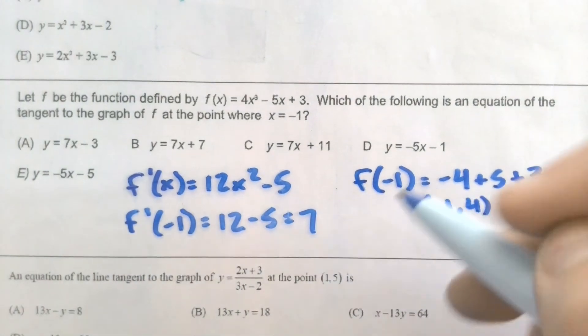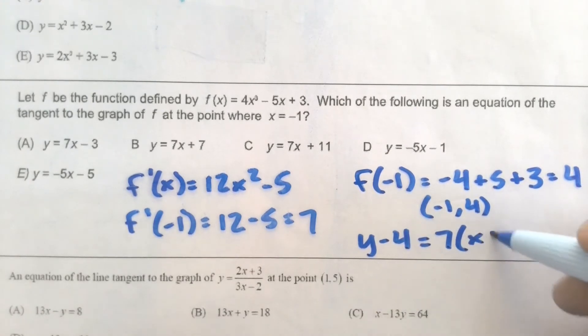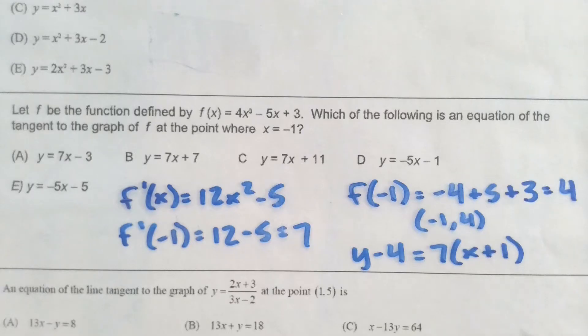And then it's just a matter of using point slope form to say y minus 4 equals 7x plus, or minus a negative 1, so plus 1. And remember, if you're dealing with a free response question, that there is no need to simplify it. I would just leave it how it is if you're curious and you want to keep going since this one is multiple choice, it ends up being C.